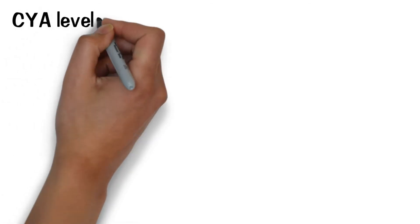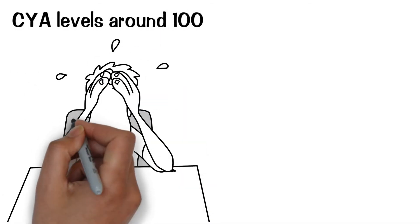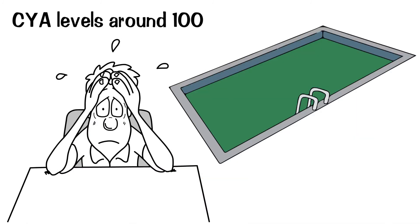At CYA levels around 100, however, a user will have a very difficult time trying to maintain their water and often they'll face an algae outbreak that's very difficult to clear up.